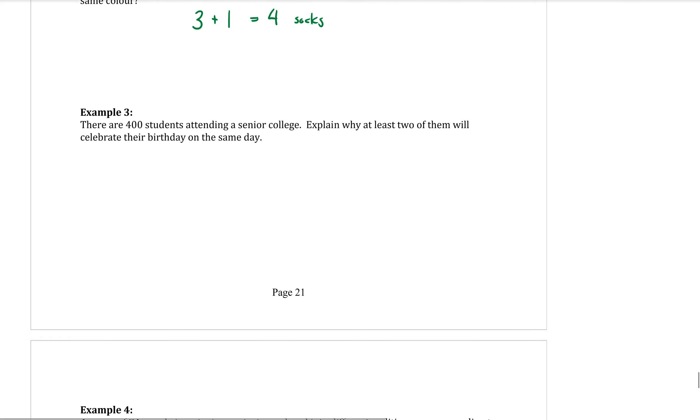Question three. There are 400 students attending a senior college. Explain why at least two of them will celebrate their birthday on the same day. Now, this one we can use that little N over K formula to help us show that. Our 400 is our total number of students that we have. How many possible birth dates are there?